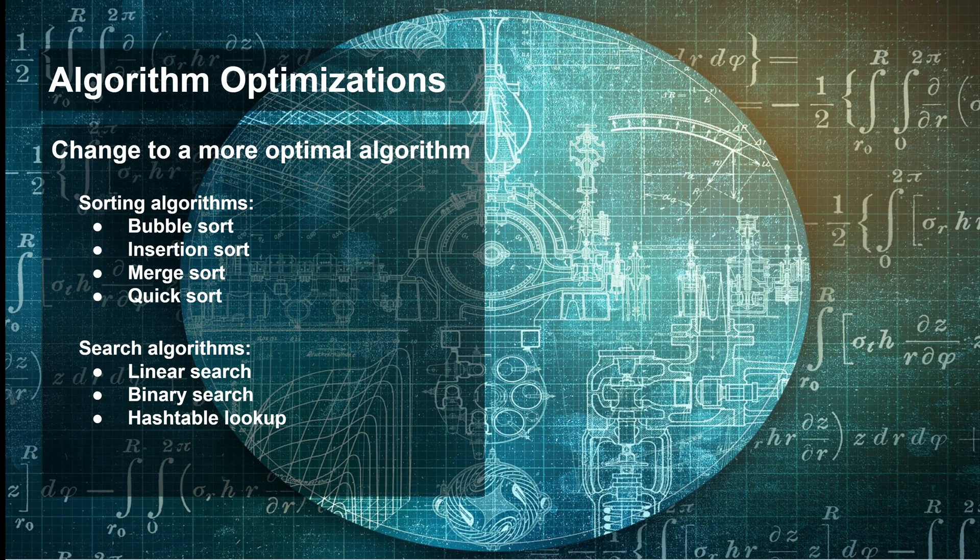The first principle is to look for algorithmic optimizations. In other words, if possible, change to a faster algorithm. You may already have come across algorithmic performance differences when studying sorting and searching algorithms during your education.